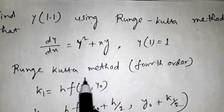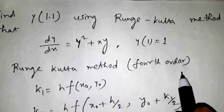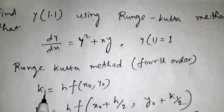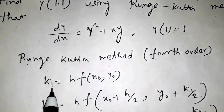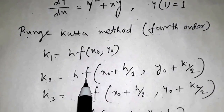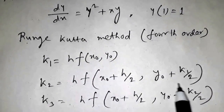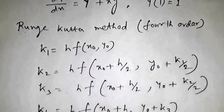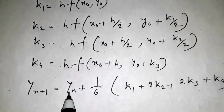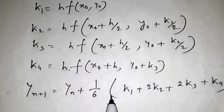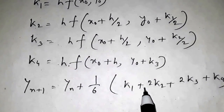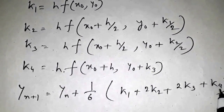First, we write the Runge-Kutta fourth order formula. We write k1 = h·f(x₀, y₀), k2 = h·f(x₀ + h/2, y₀ + k1/2), k3, k4, and lastly y_(n+1) = yₙ + (1/6)(k1 + 2k2 + 2k3 + k4).